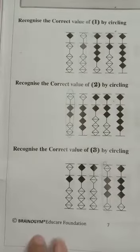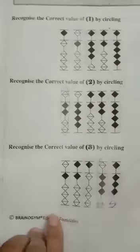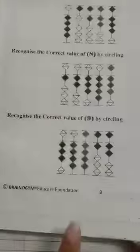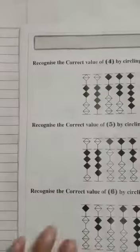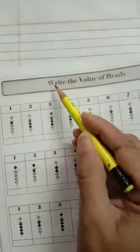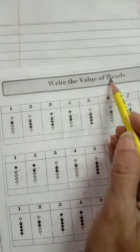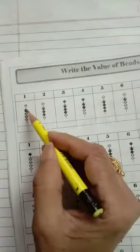So similarly, we have to complete page number eight and nine also. Now we have to start page number ten. The topic is: write the value of beads. We have to count only the dark beads and write down the value.